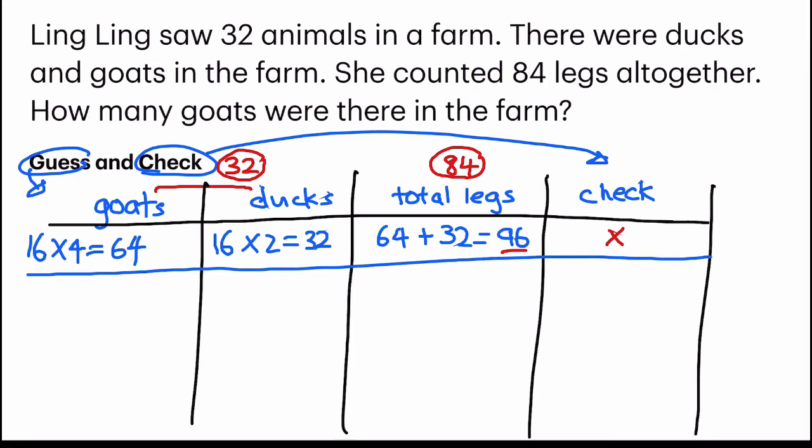We move on to the next row. Should we increase the number of goats or should we increase the number of ducks? Let's see. Our number of 96 is too far away or larger than 84. Since we know that goats have 4 legs and ducks have 2, we are going to decrease the larger number which is goats because 4 is larger than 2. Let's try decreasing it by 2 and let's have 14. 14 times 4 gives me 56. If I have 14 goats there will be 18 ducks. 18 times 2, 36. Now let's add up 56 plus 36 gives me 92. And again it's not my answer.